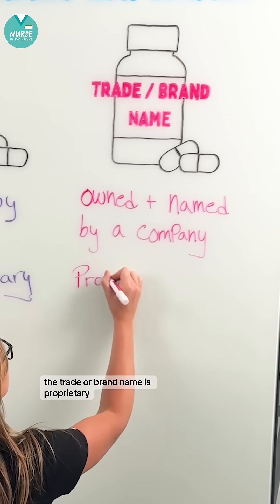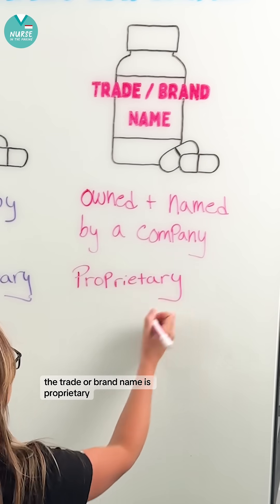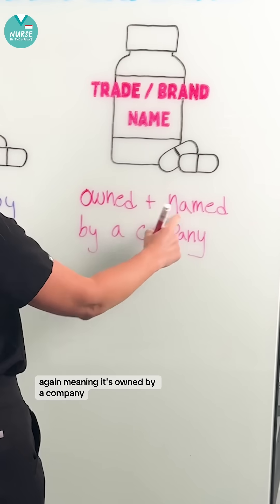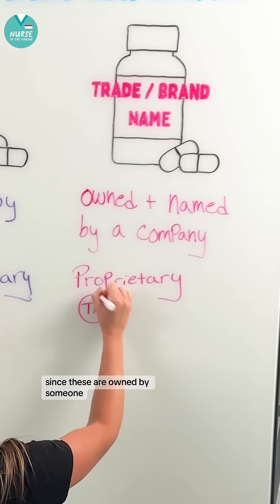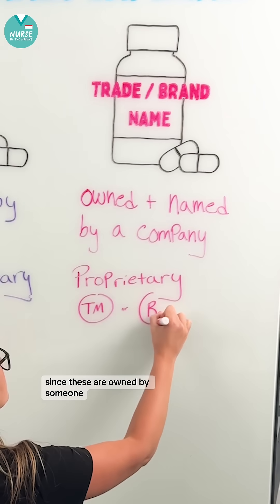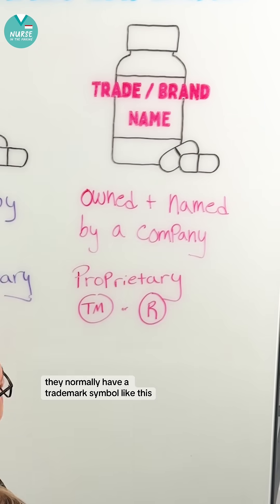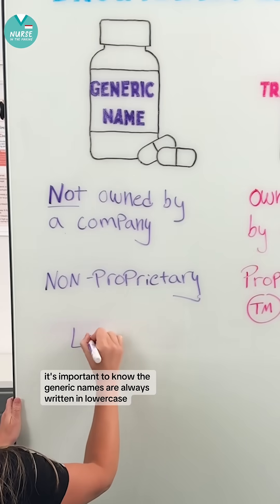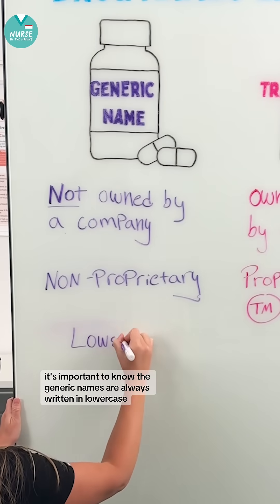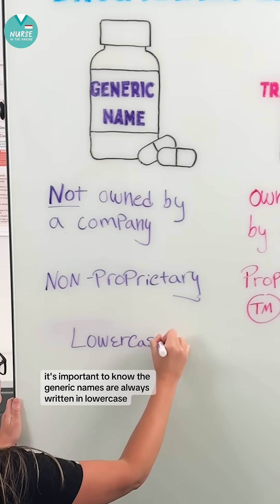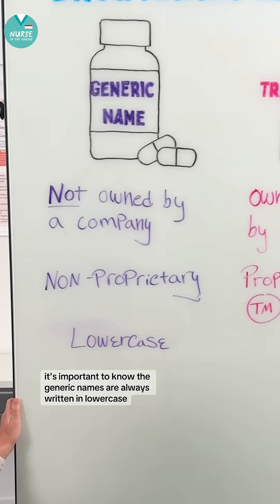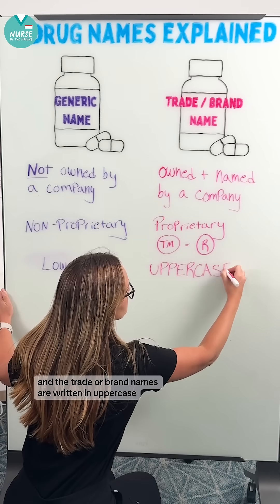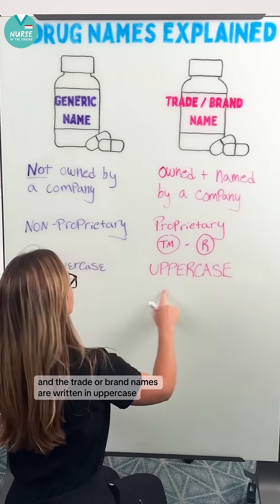The trade or brand name is proprietary, again meaning it's owned by a company. Since these are owned by someone, they normally have a trademark symbol like this. It's important to know that generic names are always written in lowercase and the trade or brand names are written in uppercase.